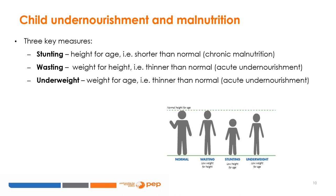There are three key anthropometric measures. The first is stunting, which captures a child's height for age, asking whether a specific child or the children of a specific subpopulation tend to be shorter than normal. Because stunting is cumulative, these indicators capture chronic malnutrition. The second is wasting, which captures weight for height, examining whether a child or group of children are thinner than normal — seen as a measure of acute undernourishment. Lastly, there is underweight, represented by weight for age, which is also a measure of acute undernourishment.